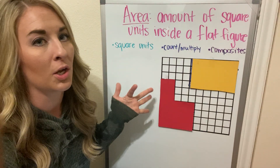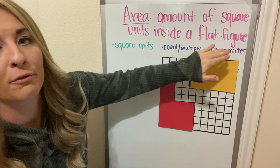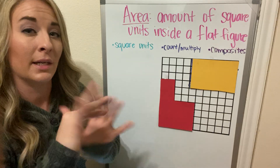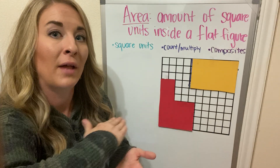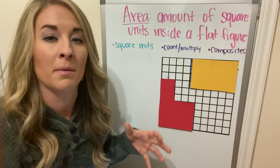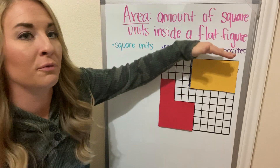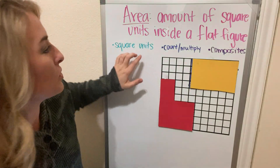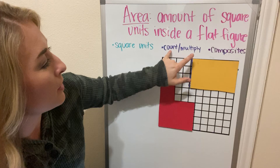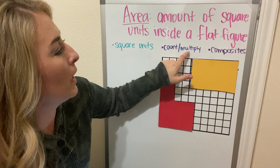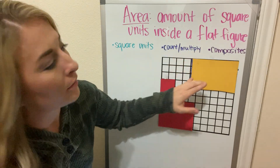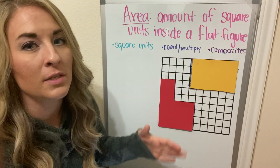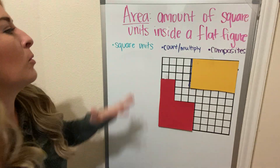As we're looking at area, we're going to go over the amount of square units inside of a flat figure. You can determine the area of a 3D figure by looking at its faces, but area is on flat surfaces — if you're determining the amount of space a cube takes up, that's volume. So remember, area is only on flat figures. Things you need to know are square units, ways to solve — you can count, but eventually you'll have to multiply — and composite figures, which is a new word for you. Composite figures are figures that don't look normal, but they exist.